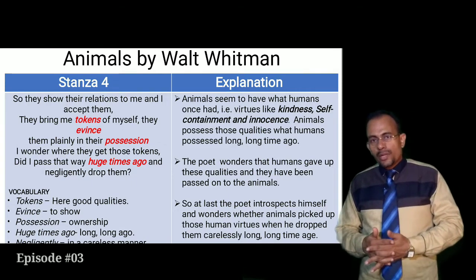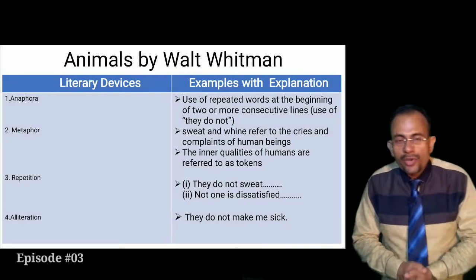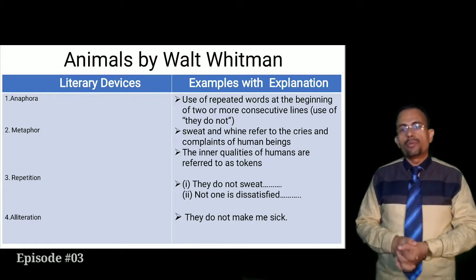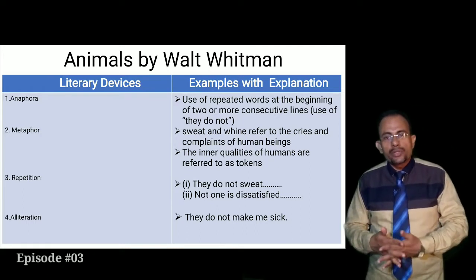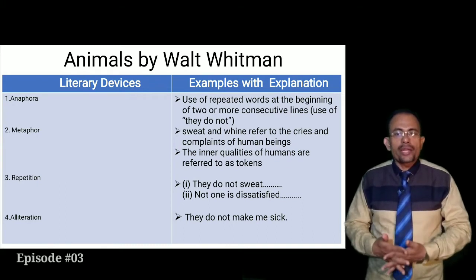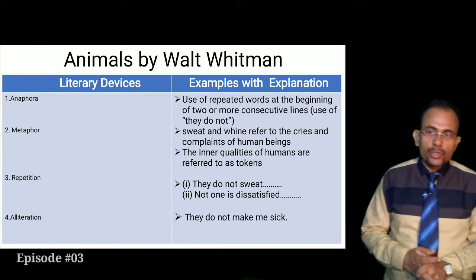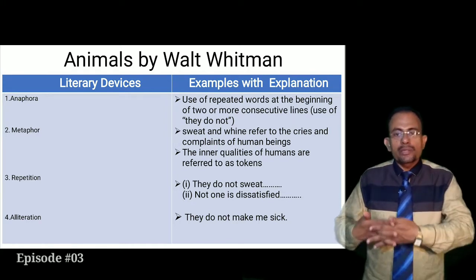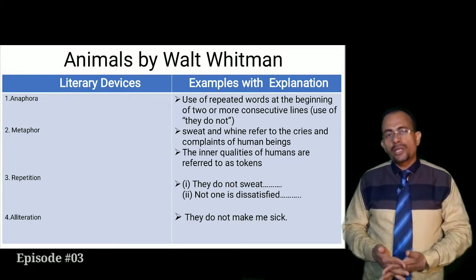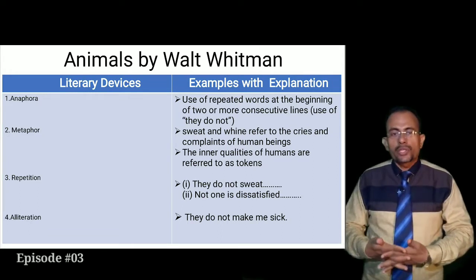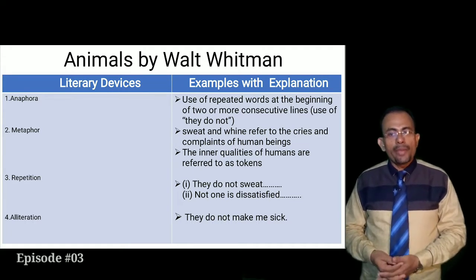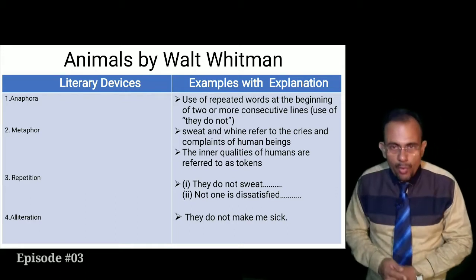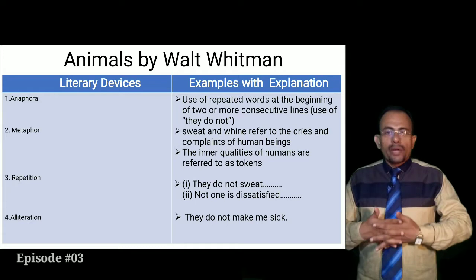Now let's look at the literary devices. First is anaphora — the use of repeated words at the beginning of two or more consecutive lines; for example, the repeated use of 'they do not.' Then metaphor — 'sweat and whine' refers to the cries and complaints of human beings. Repetition is also seen: 'they do not,' 'not one is dissatisfied,' etc. Alliteration is the repetition of consonant sounds, as seen in 'they do not make me sick' and other sentences in the poem.